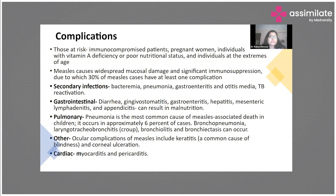One of the most common complications is secondary infection. Otitis media and diarrhea are among the most common. Secondary infections can include bronchopneumonia, bacteremia, and gastroenteritis. Diarrhea is seen in almost 8 percent of children who get measles, and otitis media in almost 6 percent. If there is a latent tuberculosis infection, that can also get reactivated.